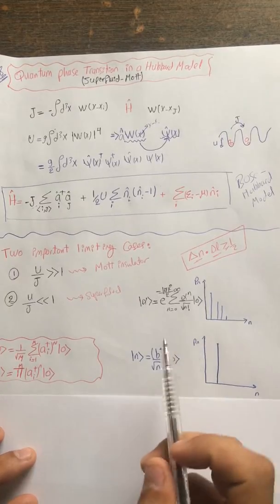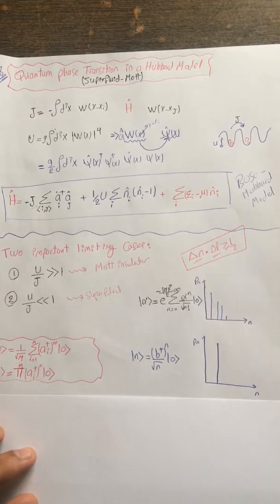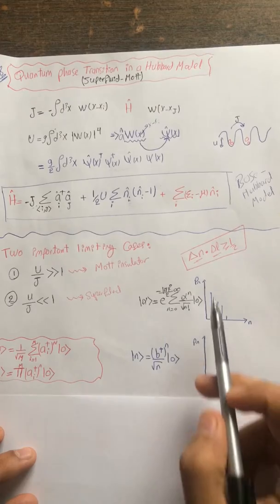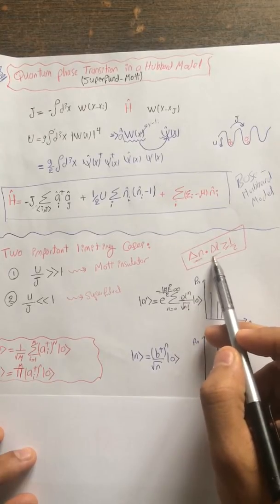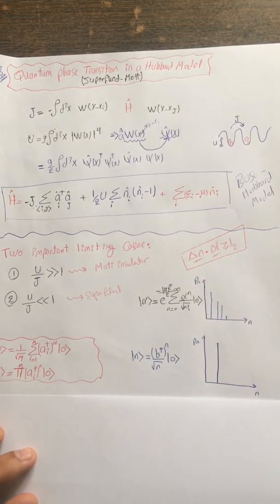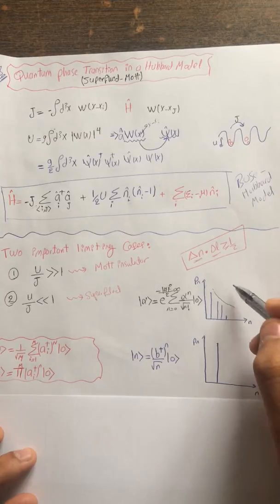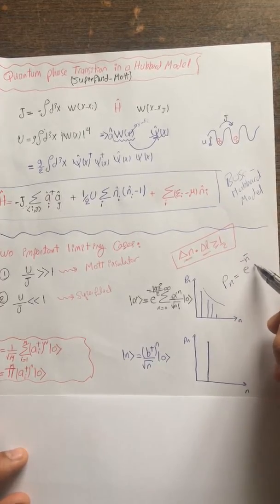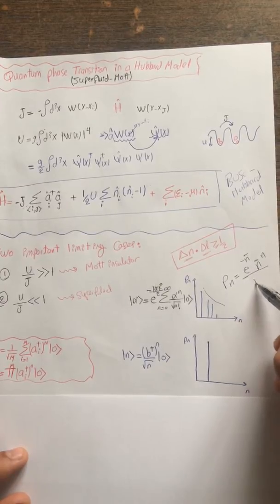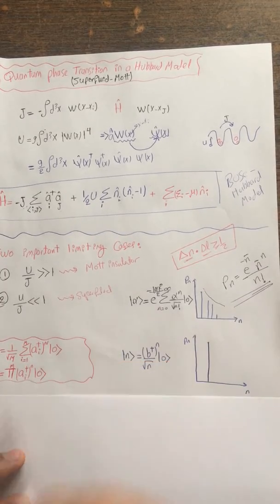If you look at the pictures, you find that for the superfluid case the wave functions are well localized, meaning you have extremely large uncertainty in the number of particles — huge fluctuation. That is why the variance in phase dramatically decreases. This gives the Poissonian distribution, which is nothing else than the exponential times the mean occupation to the power n over n factorial — for the coherent state.